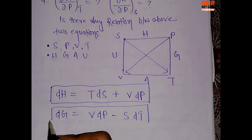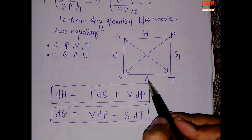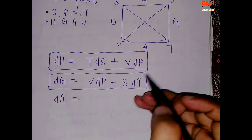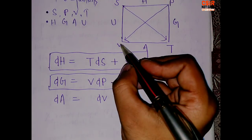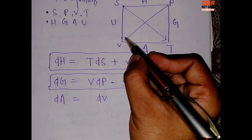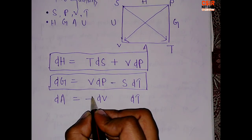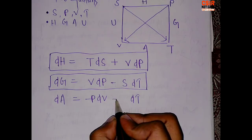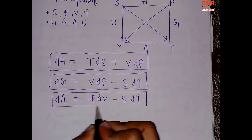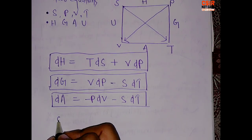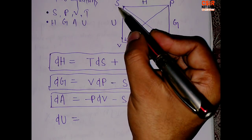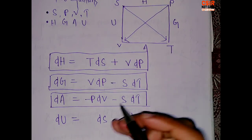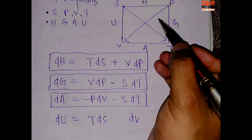For Helmholtz energy: dA — A is between V and T, so write dV and dT. The arrow at V is emerging, so P carries a negative sign giving minus P dV. The arrow terminates at T so again negative sign, giving minus S dT. For internal energy: dU — U is between S and V, so write dS and dV. From S, arrow goes to T giving positive T dS, and at V it is merging so minus P dV.